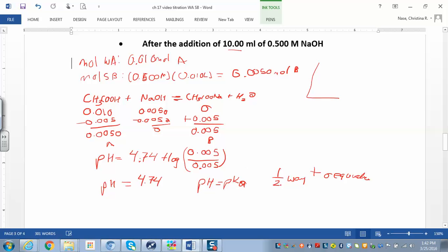Halfway to the equivalence point means I added 10 mL to get here. If I add another 10 mL, I'll reach the equivalence point. I need twice as much volume to get to the equivalence point.